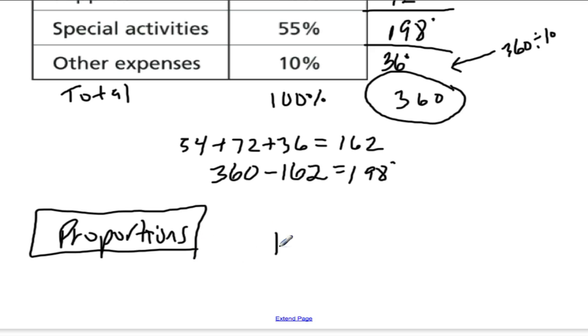10 percent is just 10 out of 100, and I'm saying that equals some number out of 360 degrees. So if I could solve this proportion, I could figure out what 10 percent should be out of 360.